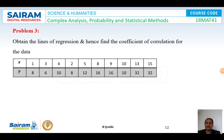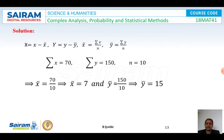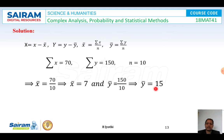Next problem: Obtain the lines of regression and hence find the coefficient of correlation for the given data. Apart from finding the lines of regression, we also need to find the coefficient of correlation. The data for x and y values is given in tabular form. When we calculate, summation x = 70, summation y = 150, n = 10, so x̄ = 70/10 = 7 and ȳ = 150/10 = 15.